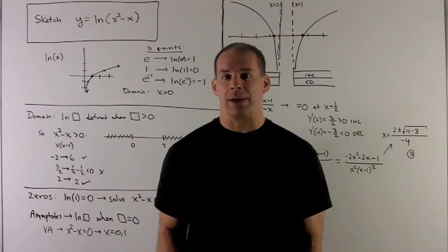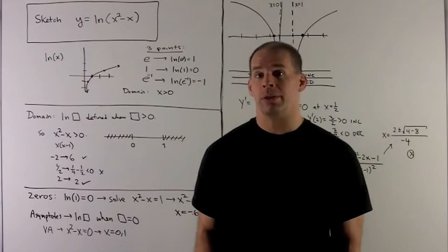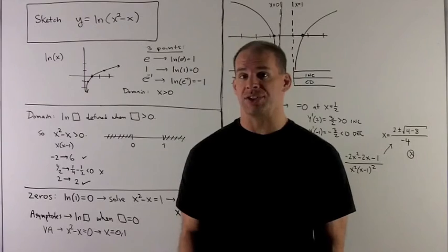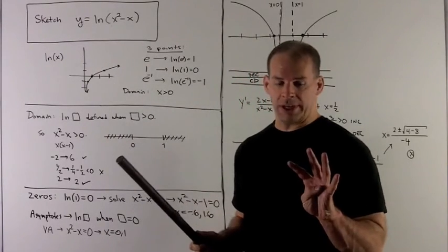Let's sketch the function y equals natural log of x squared minus x. Before we get started, let's review the graph for natural log of x itself. For this graph, there are four things we need to remember.